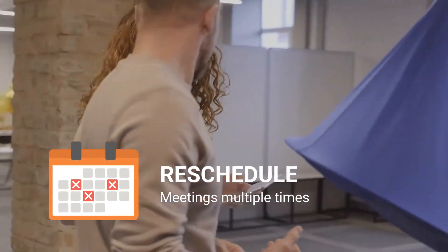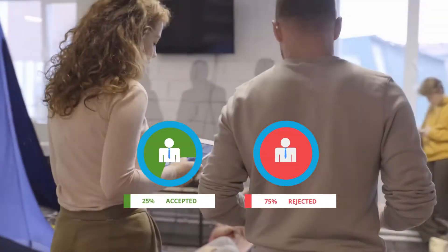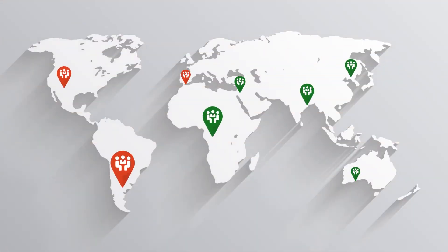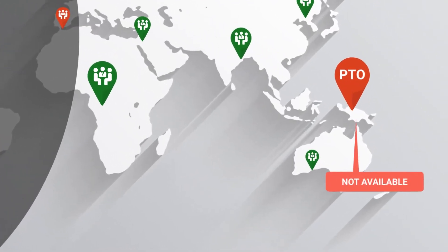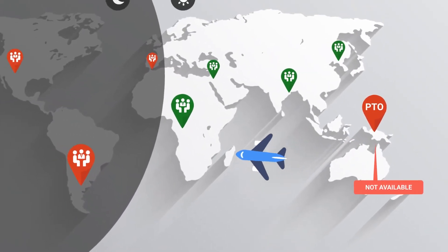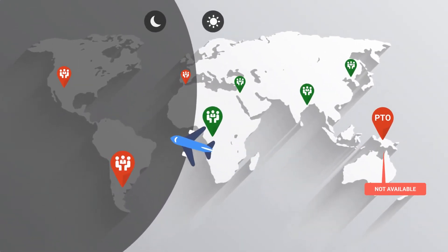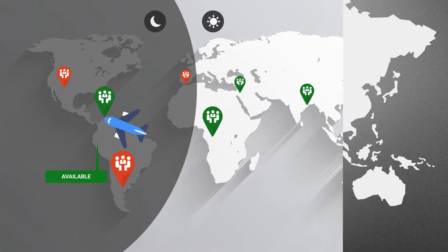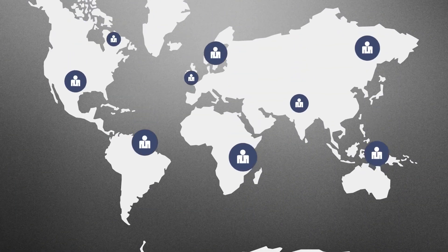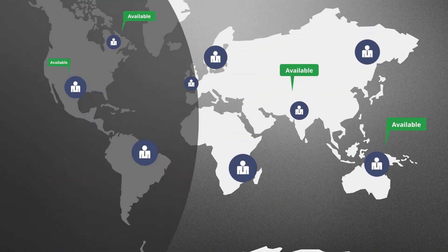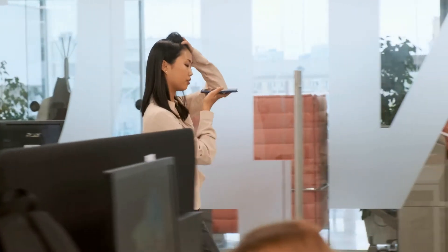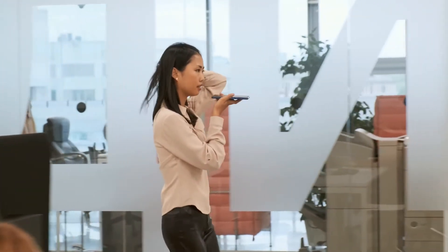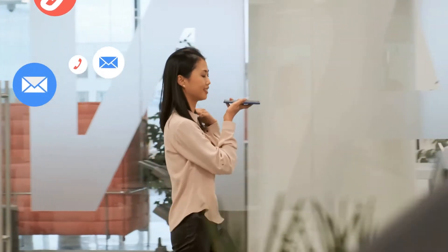Often you have to schedule and reschedule meetings multiple times as you don't have 100% invitee acceptance — due to unavailability caused by different time zones, locations, invitees out of office, and employee travel conflicting with your scheduled meeting time. How will you know when maximum invitees will be available?